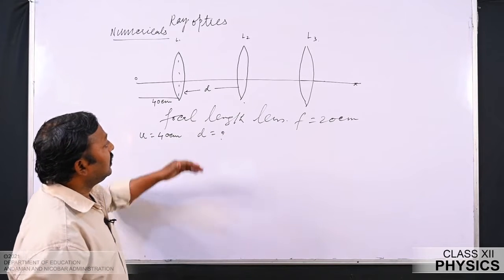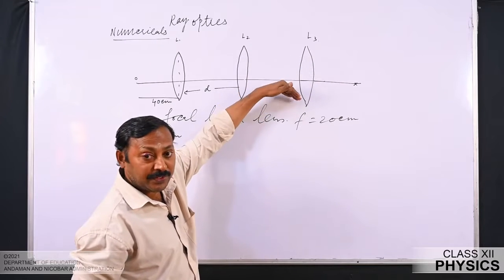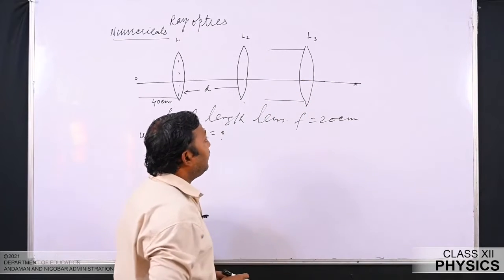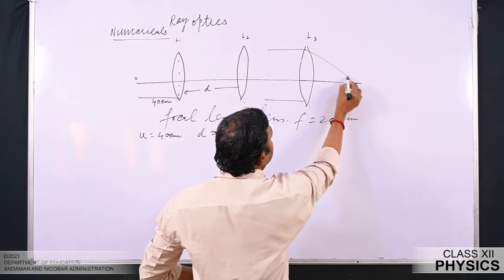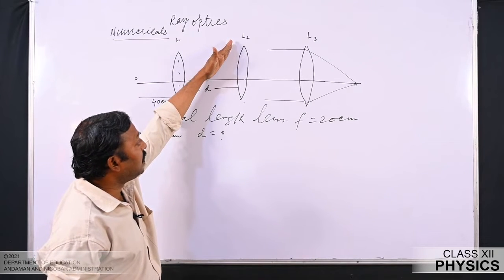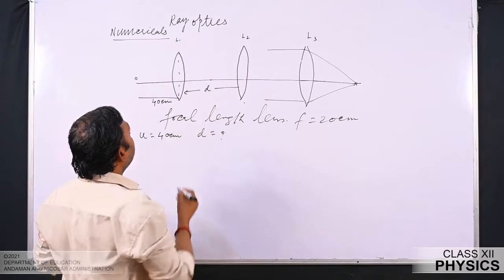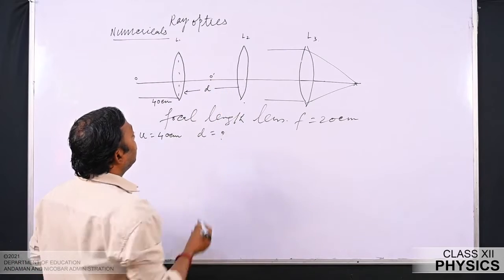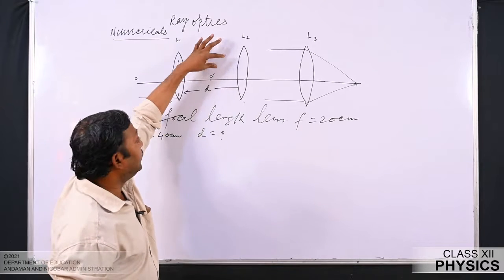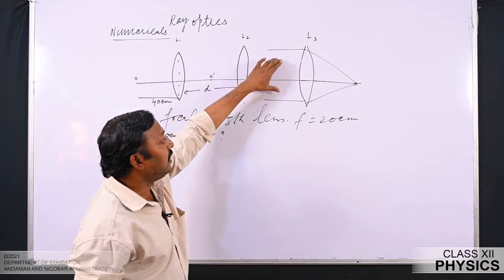According to the question, rays are meeting at the focus point of L3. This means the rays falling on lens L3 must be parallel to the principal axis. A parallel beam when it falls on lens L3 will meet at the focus point. These parallel beams come from lens L2, which is only possible if the object lies at the focus point of L2. The image formed by lens L1 — call it O' — acts as the object for lens L2.